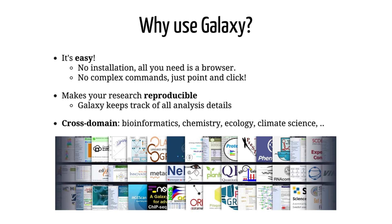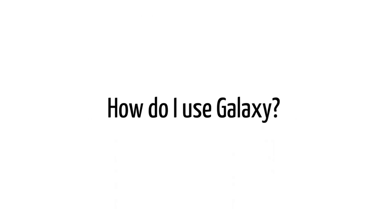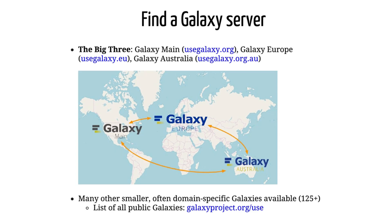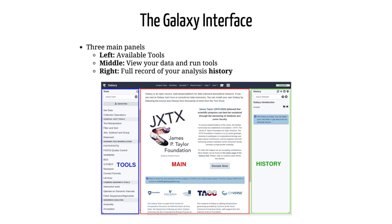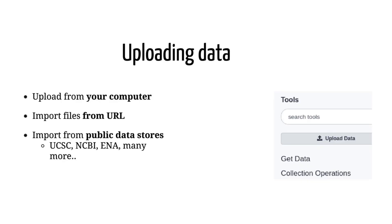Galaxy supports many different scientific domains. There are three main Galaxy servers: Galaxy Main, Galaxy Europe, and Galaxy Australia. The Galaxy user interface consists of three main parts: on the left is the list of available tools, in the middle panel you run your analysis tools and view your data and results, and on the right is a full record of your analysis history.